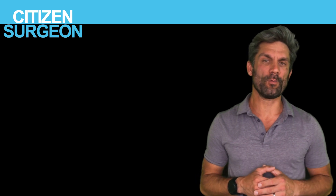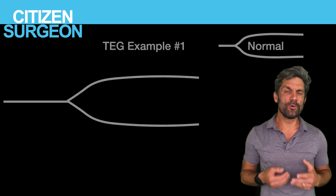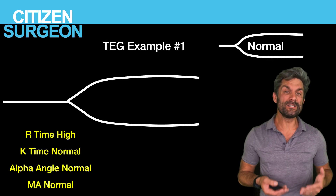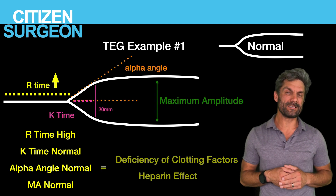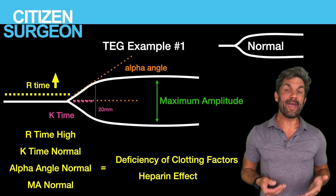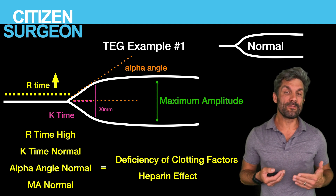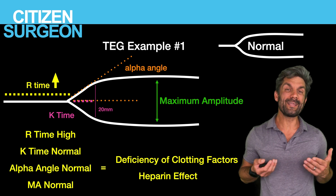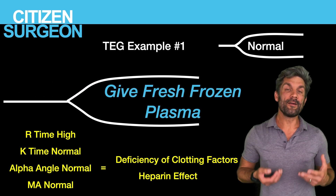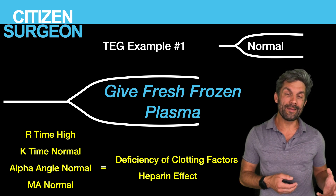Let's go into the different waveforms — about six to go through. In the first, we have a high or increased R time, a normal K value, a normal alpha angle, and a normal maximum amplitude. If the R time is high, you don't have enough coagulation factors — or heparin is in the system — causing the cascades not to proceed normally. Clinically, what would you give? You'd give fresh frozen plasma, which is full of the coagulation factors needed to generate thrombin and fibrin.